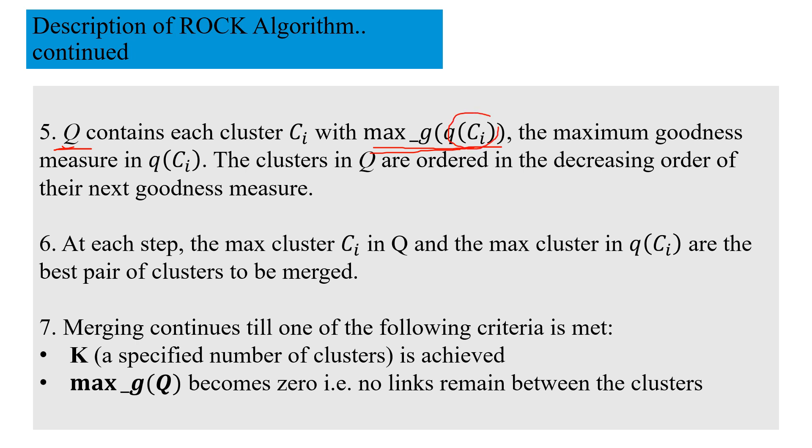Q, the global heap, contains each cluster Ci with the max G(Q(ci)). Q(ci) is the local heap with respect to cluster Ci, and the maximum goodness measure from this Q(ci) is stored in capital Q, the global heap. For each cluster the maximum goodness measure is stored in Q, and the clusters in Q are ordered in the decreasing order of goodness measure.